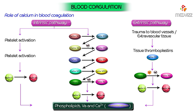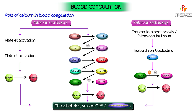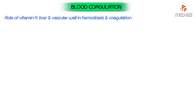Role of calcium in blood coagulation: except for the first two steps in the intrinsic pathway, calcium ions are required for the promotion of all the reactions. Therefore, in the absence of calcium ions, blood clotting will not occur, and coagulation of blood can be prevented in vitro by removal of calcium ions.